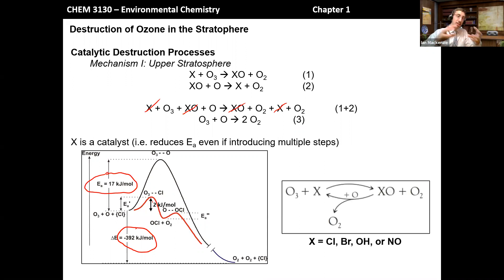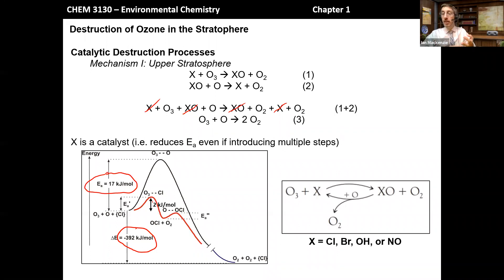If we take steps 1 and 2 and represent them graphically, we can show a cycle where we go back and forth between X and XO. Cycling between reactions 1 and 2, each cycle destroys one ozone molecule and generates two oxygen molecules. This is of concern because it is net destructive to ozone, and there are a number of different groups that can act as these catalysts — these X groups.